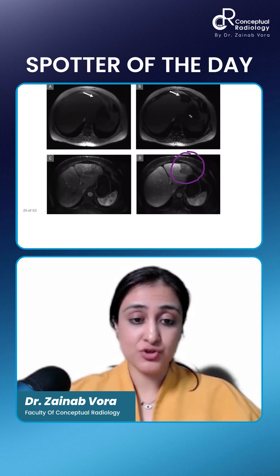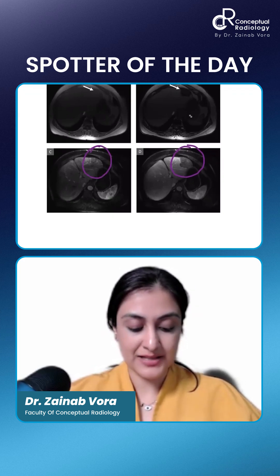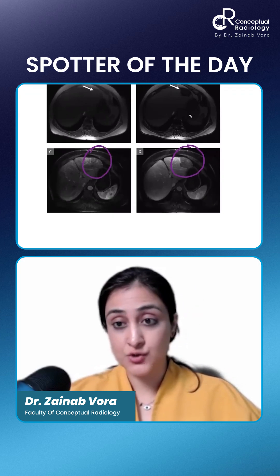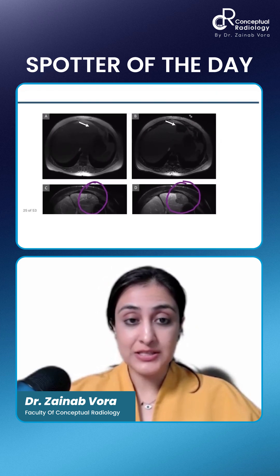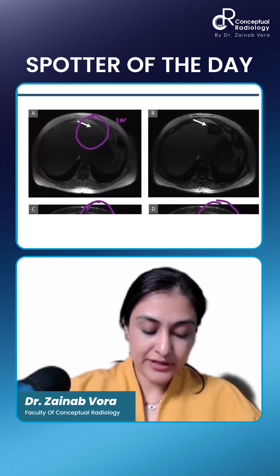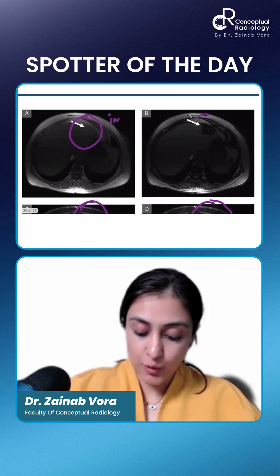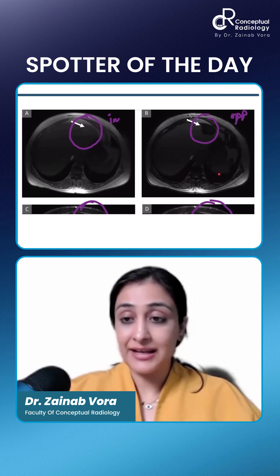There is a mass which on arterial phase is showing some enhancement. On venous phase it is showing washout. This is the in-phase and this is the opposed phase. How do I know? Because we can see that there is an India ink artifact here.